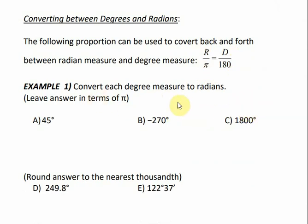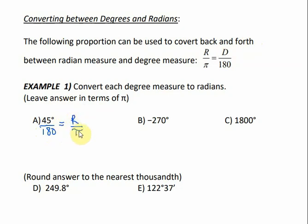So let's convert each degree measure to radian measures. It says to leave our answer in terms of pi, and I'll show you what that means in just a minute. Since we have the degree here, we're going to divide it by 180, and we're going to set that equal to R over pi. Since this is a proportion, the way that you solve proportions is by cross-multiplying.